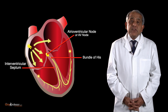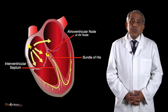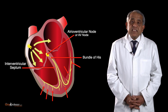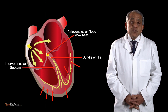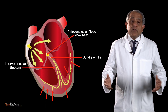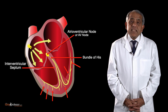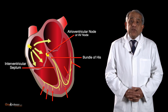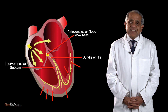Within the ventricular musculature, each of these branches ramifies as Purkinje fibers to supply all of the musculature. This is the pathway taken by the impulse generated in the sinoatrial node.